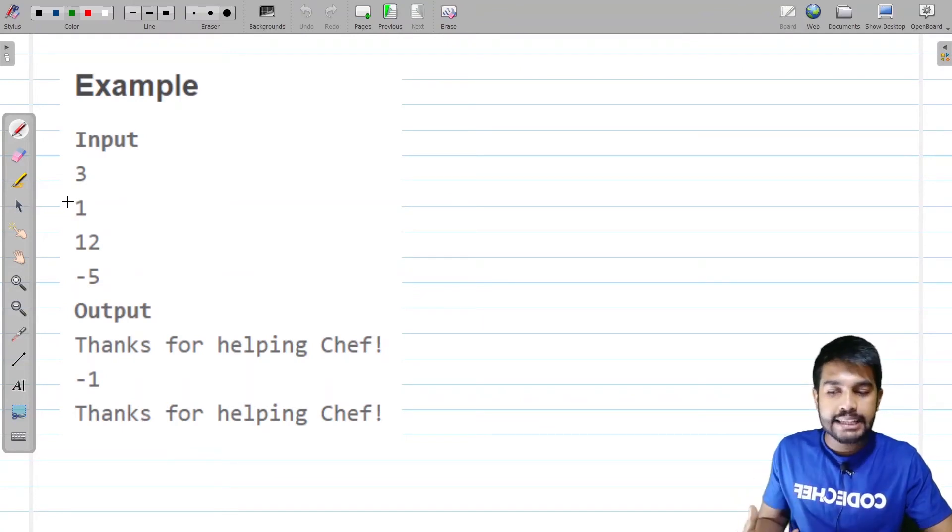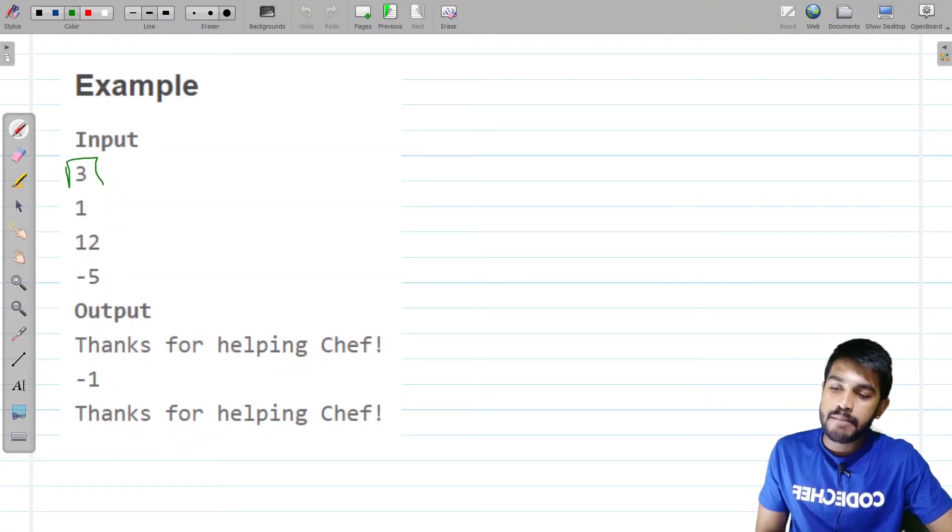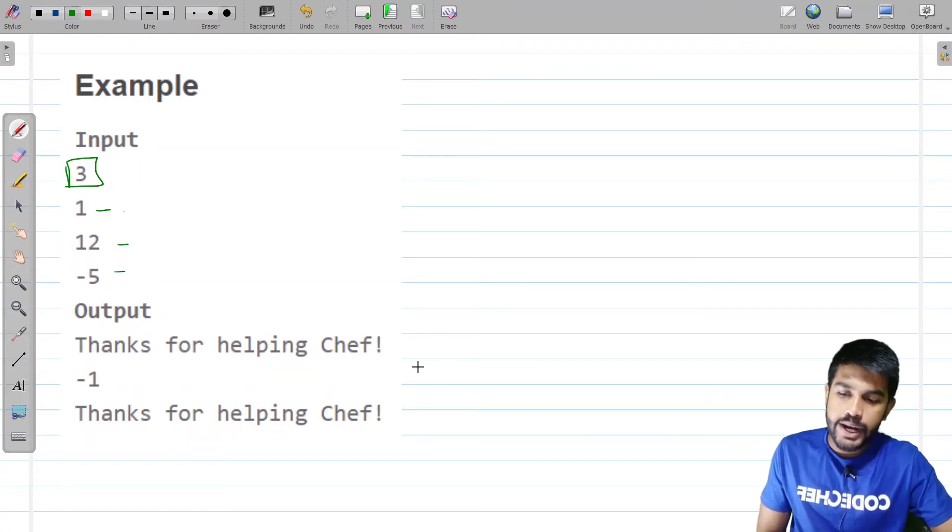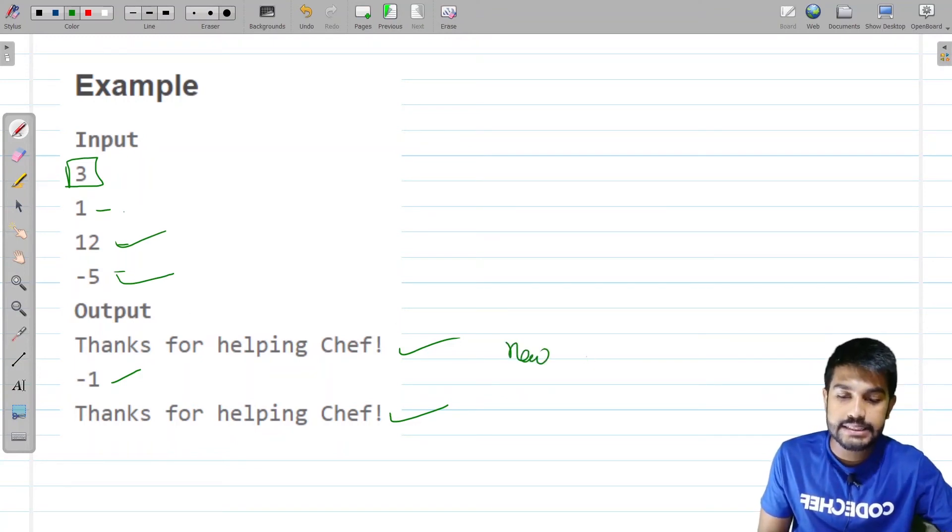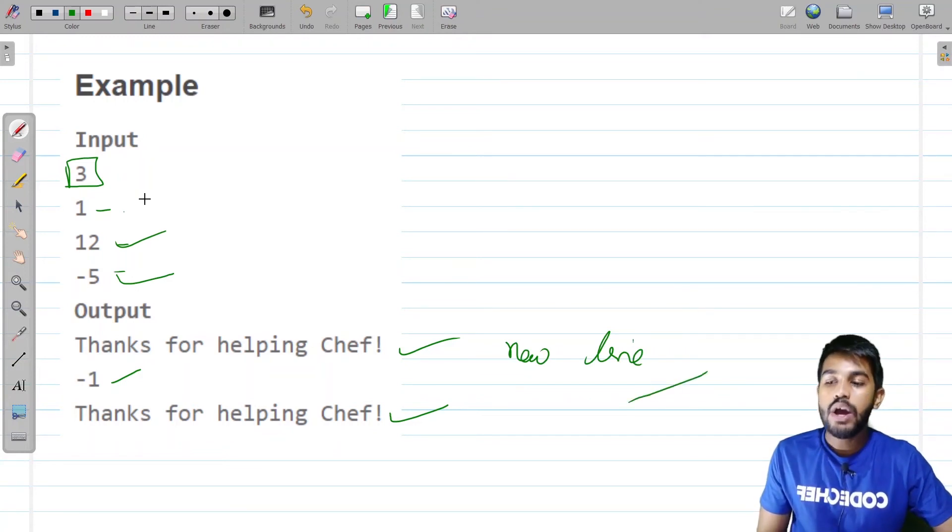Now let's look at the sample test cases itself. So these are the number of test cases, these are the individual test cases. 1 is less than 10, so it is printing thanks for helping chef, and 12 is greater than 10, so it is printing minus 1. Minus 5 is less than 10, so it is printing thanks for helping chef. Now one more thing to consider is we need to print the value of each test case on a new line itself. Now let's move to the coding arena and implement this.